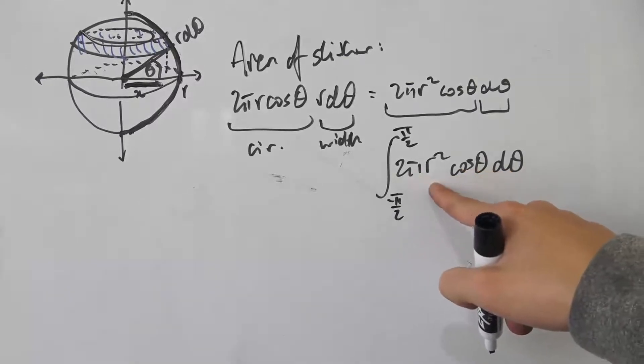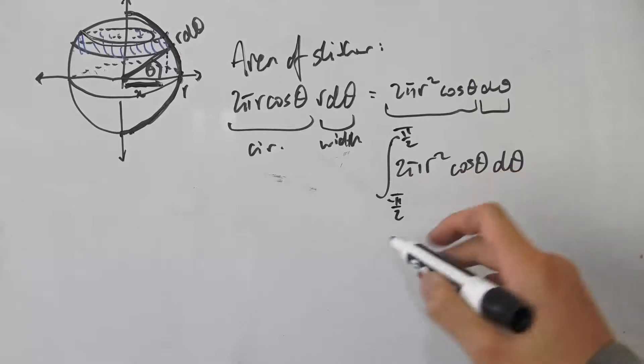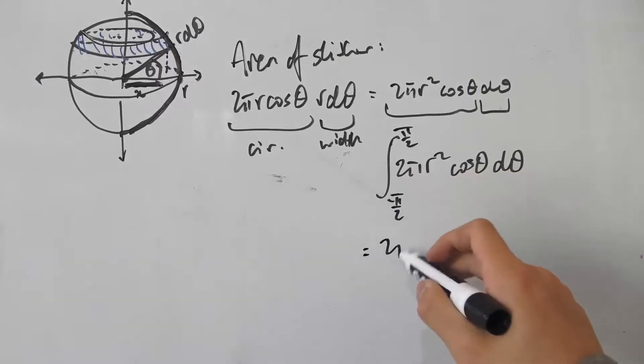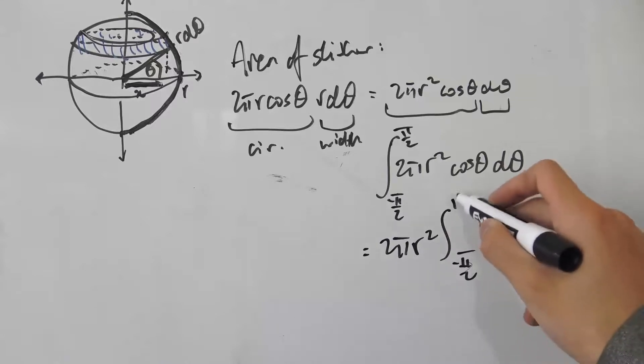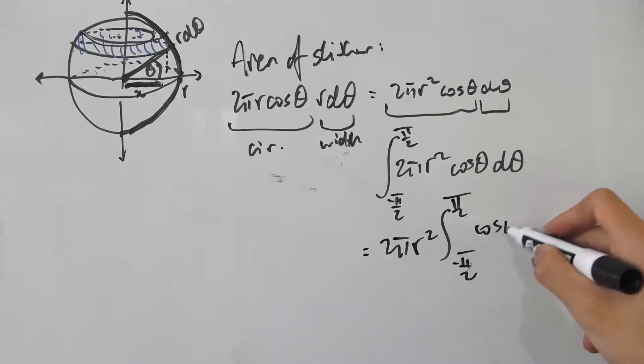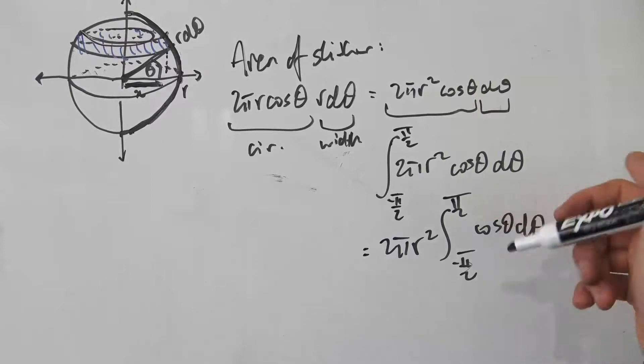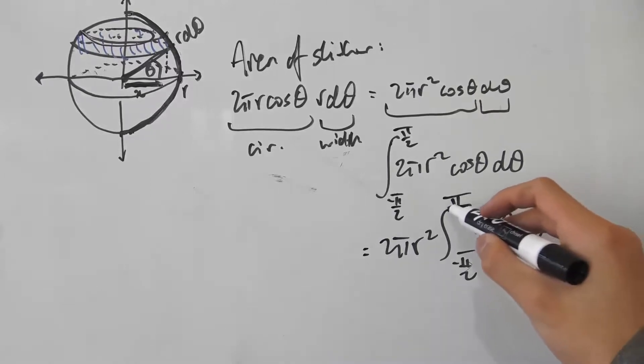2πr² is just a constant in terms of θ, so I can bring that out the front. That becomes 2πr² times the integral from negative π/2 to π/2 of cos θ dθ. I notice that cos is an even function. You can use that even function identity when you have symmetrical bounds, but I'm not going to do that in this video.